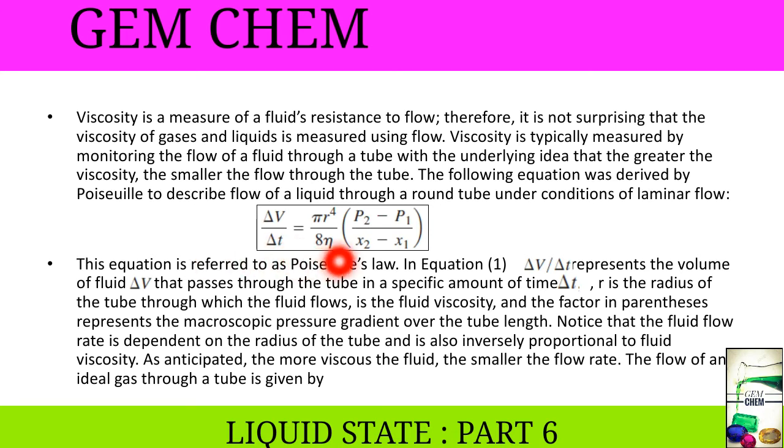Now, this equation is referred to as Poiseuille's law. In equation 1, delta V by delta T represents a volume of fluid delta V that passes through the tube in a specific amount of time delta T. And r is the radius of the tube through which fluid flows, and eta is the fluid viscosity.